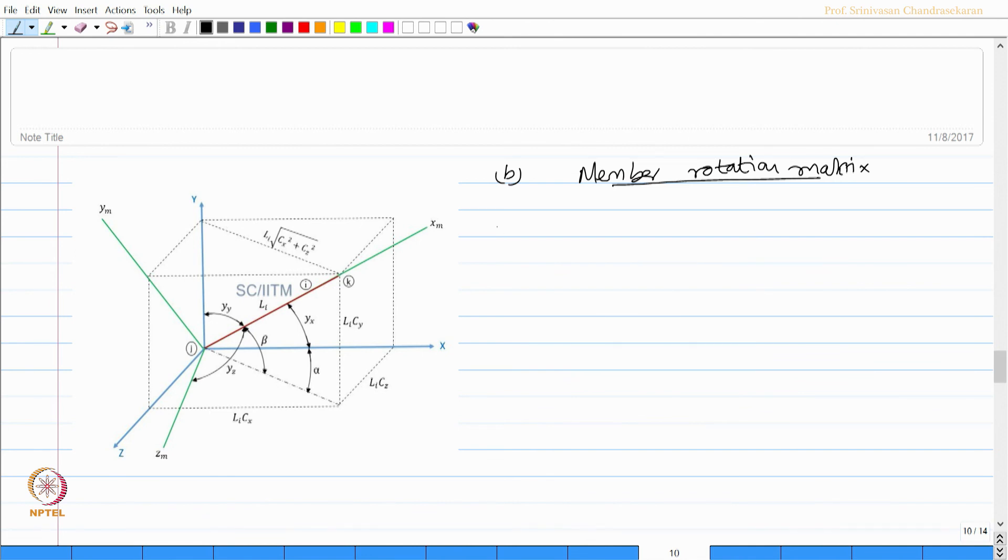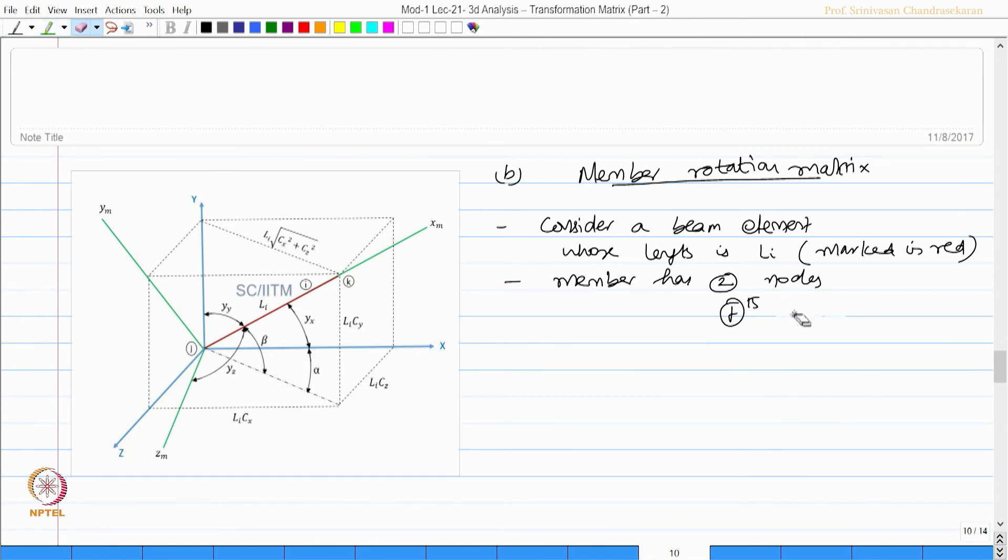Let us consider a beam element whose length is Li marked in red color. You can see Li. The member has two nodes, j-th node and k-th node.